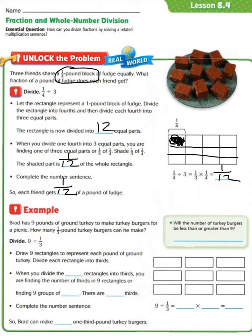Let's look at the next example. Brad has 9 pounds of ground turkey to make turkey burgers for a picnic. How many 1/3 pound turkey burgers can he make? Now we divide: 9 divided by 1/3, because he has 9 pounds and each burger is going to be 1/3 pound. The first step is to draw 9 rectangles to represent each pound of ground turkey, and then divide each rectangle into thirds.